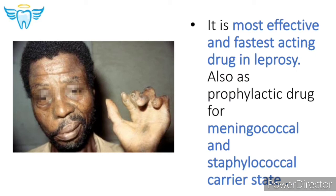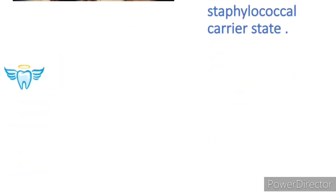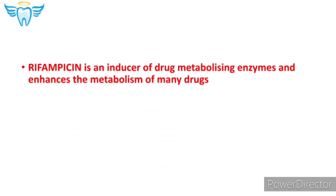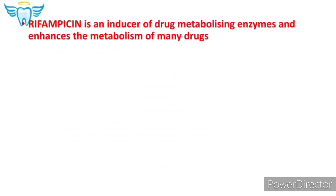Rifampicin is the most effective and fastest-acting drug in leprosy, and also used as a prophylactic drug for meningococcal and staphylococcal carrier states. So apart from tuberculosis, it is also used in these three conditions.